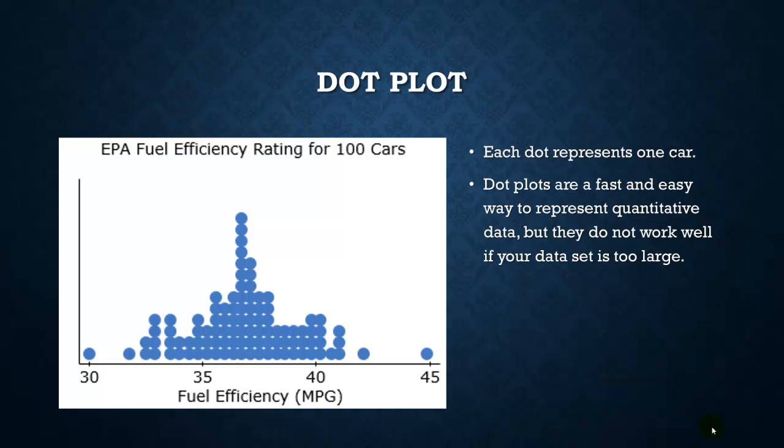One way to do this is something called a dot plot. A dot plot is where you just break down, in this example here, a number line into intervals of 0.5 width. So in other words, this dot here represents all the vehicles that have a mile per gallon rating between 30 and 30.5. And then if there was a dot next to it, it would be 30.5 to 31, etc.